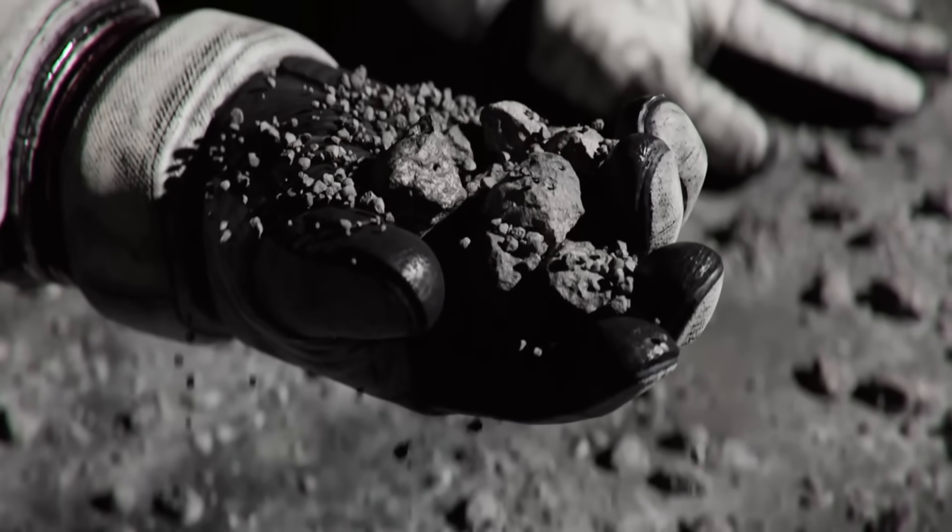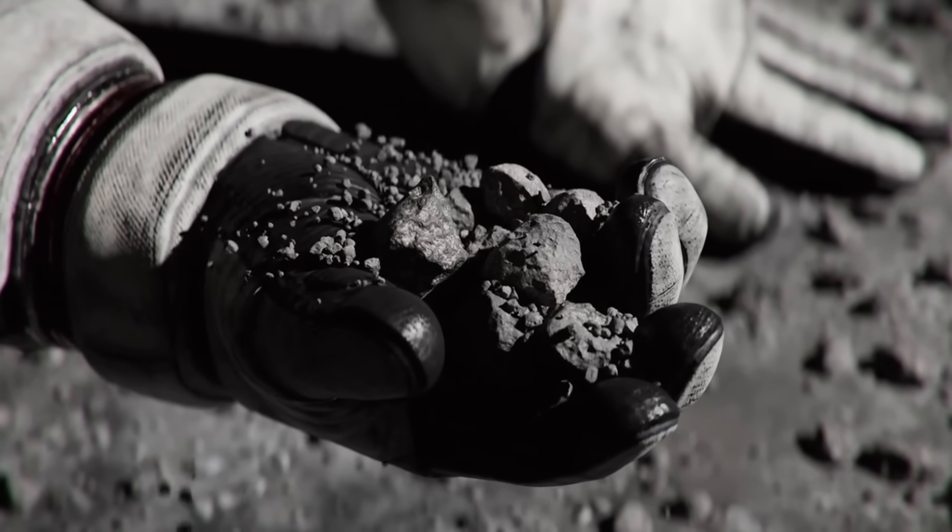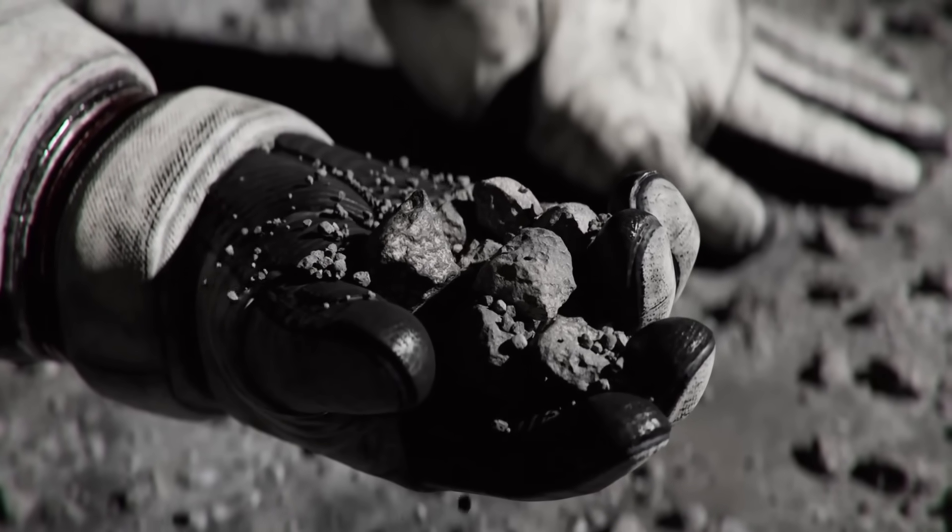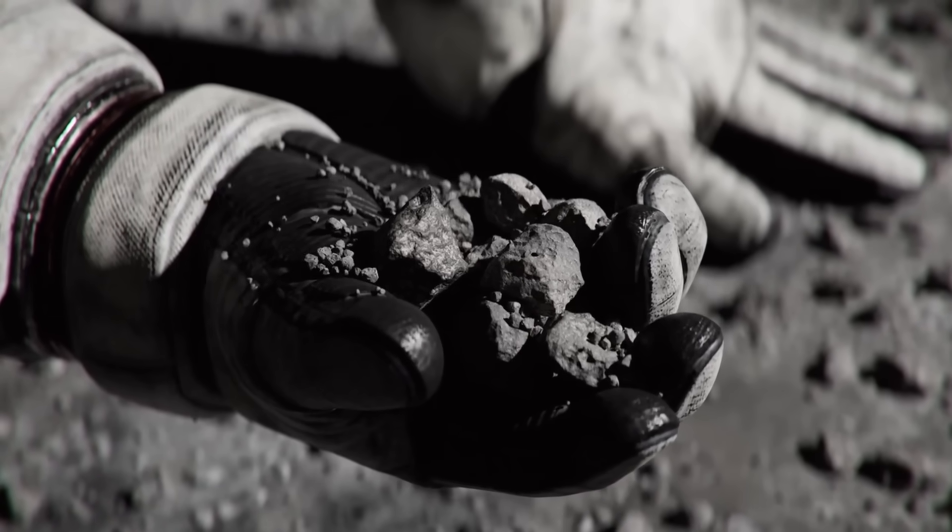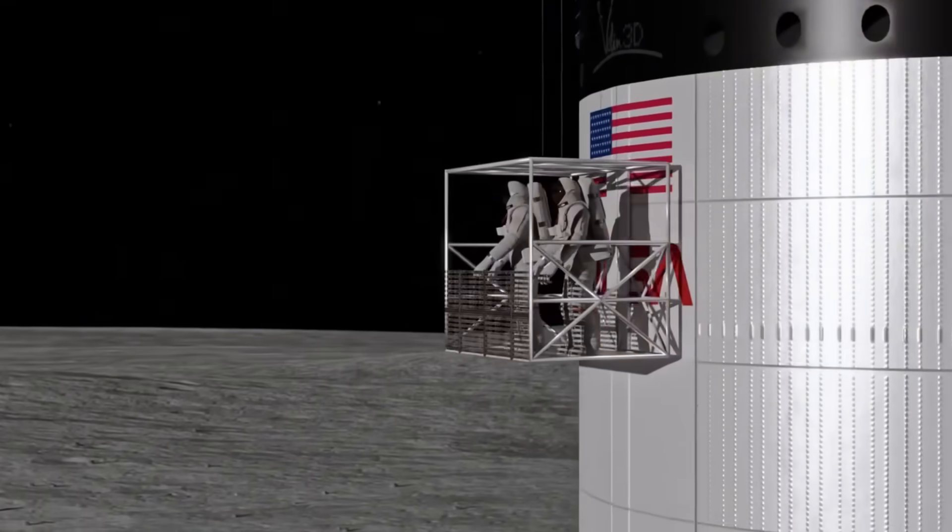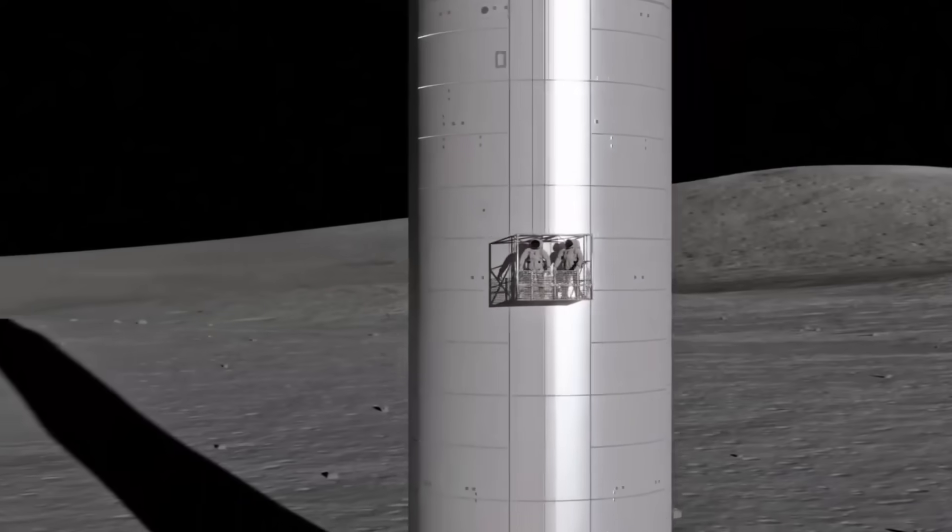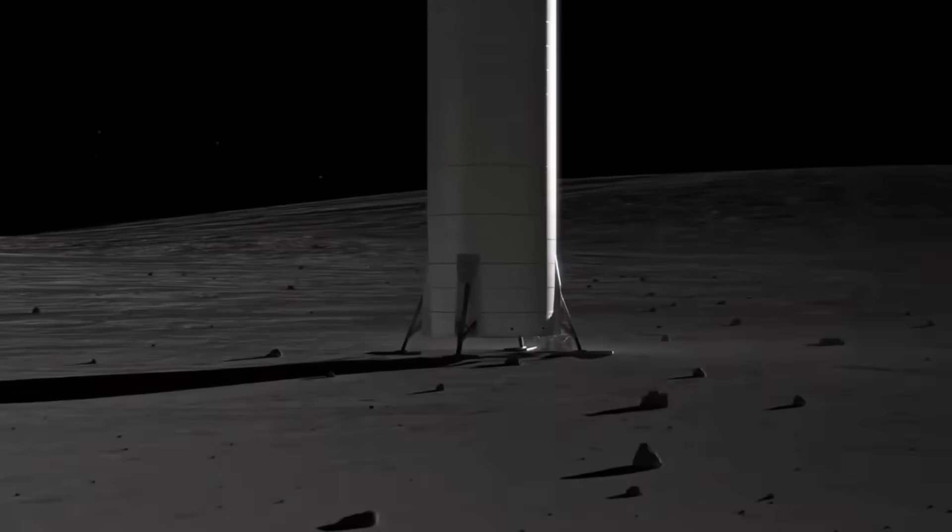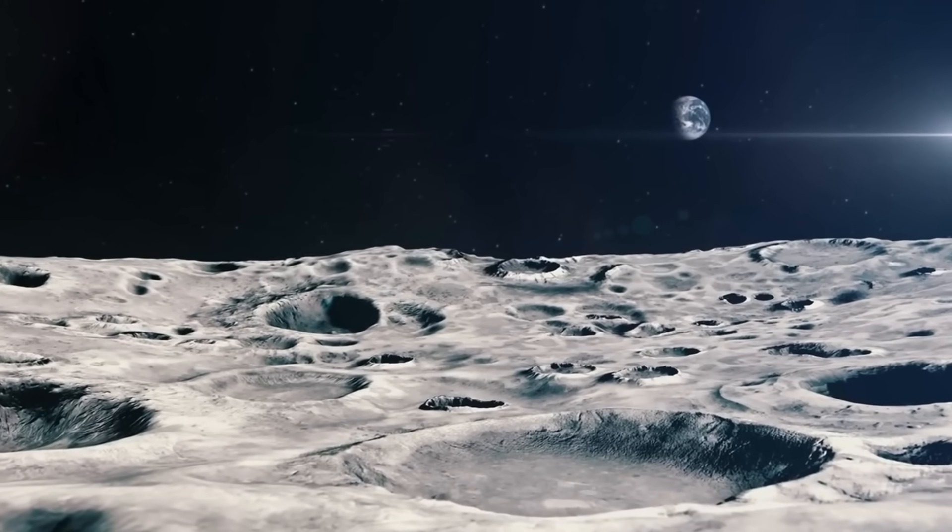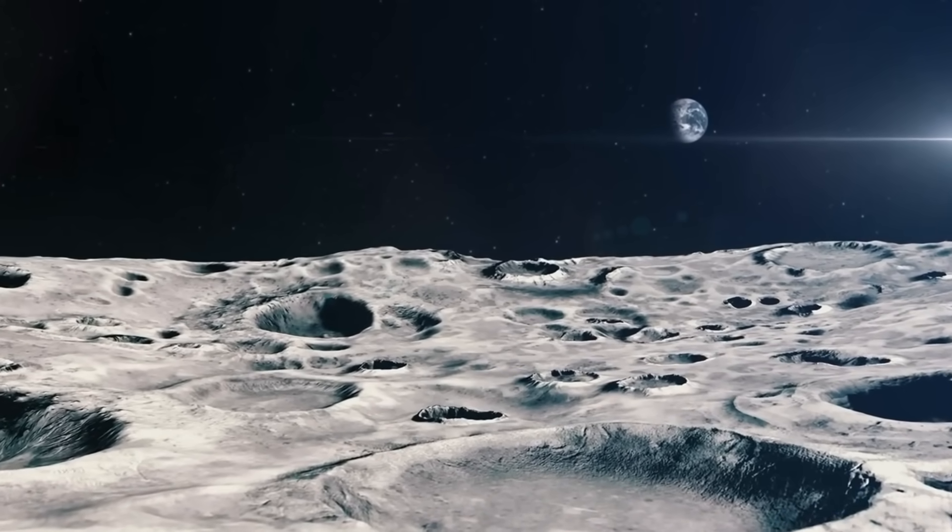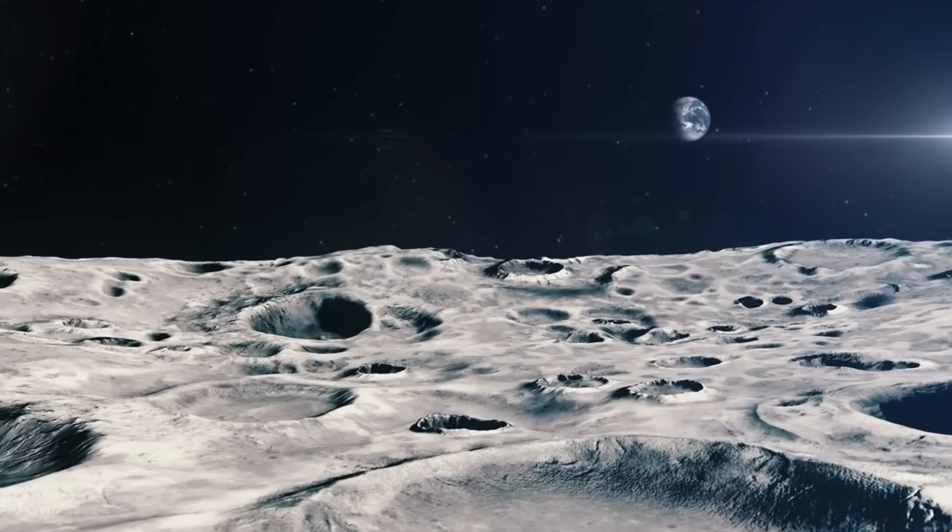Each repurposed starship section gets covered with lunar regolith, providing protection from radiation and micrometeorites. The lower gravity of the Moon makes this construction process far more manageable than similar operations would be on Earth. Networks of these repurposed sections, connected by pressurized corridors, will grow into the first true lunar cities.